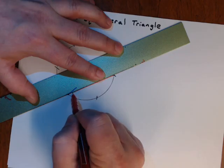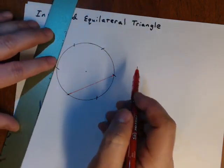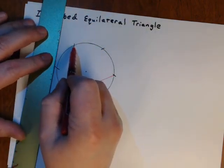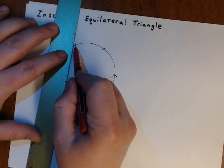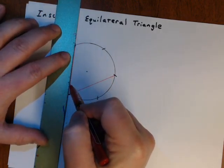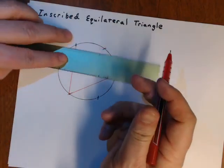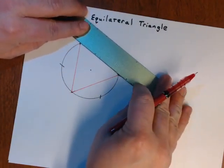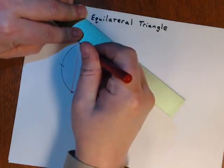Once we've gone all the way around the circle, we connect points. We don't want to connect every point, because if we did, we would make a hexagon. But instead, we'll just connect every other one.